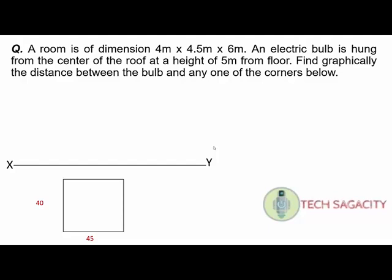In the top view, the room is drawn with dimensions 40 and 45. The roof corners are labeled A, B, C, D and the floor corners are labeled P, Q, R, S. The top view shows the rectangle with these points identified.